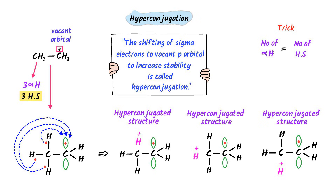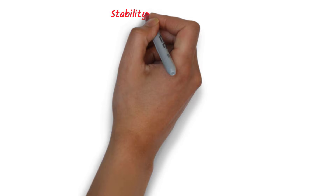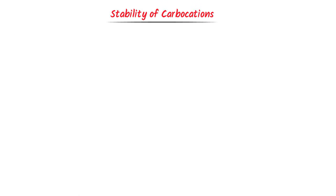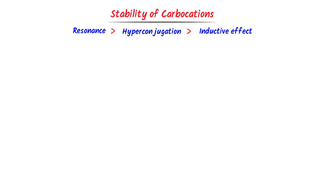Therefore, we define hyperconjugation as the shifting of sigma electrons to a vacant p orbital to increase stability. If you want to master the concept of hyperconjugation, watch our video and its link is given in the description. Now let me teach you the stability of carbocations.